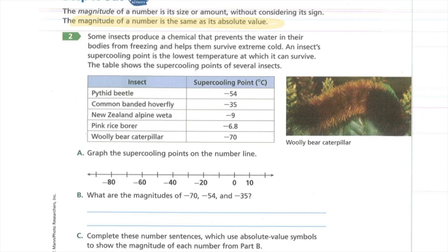Some insects produce a chemical that prevents the water in their bodies from freezing and helps them survive extreme cold. An insect's supercooling point is the lowest temperature at which it can survive. The table shows the supercooling points of several insects. Graph the supercooling points on the number line. I want you to pause and graph it and then hit play. Check this and see if you agree.